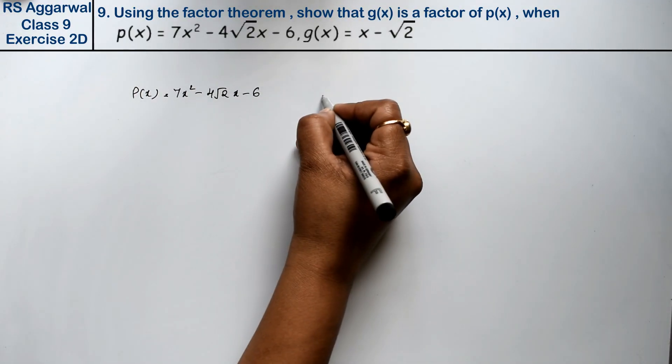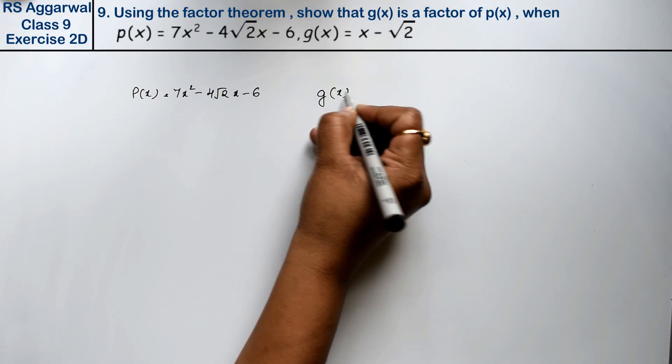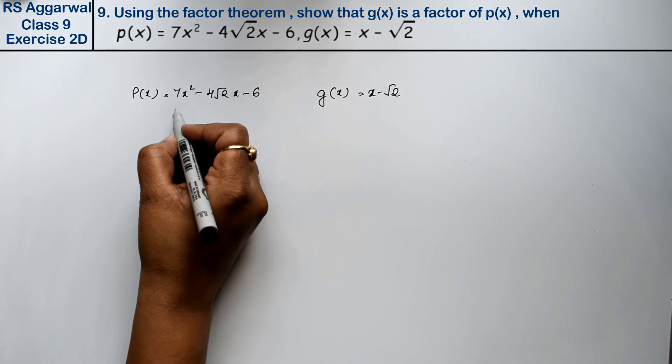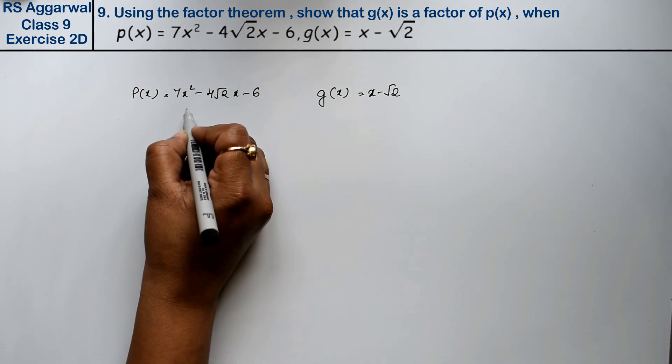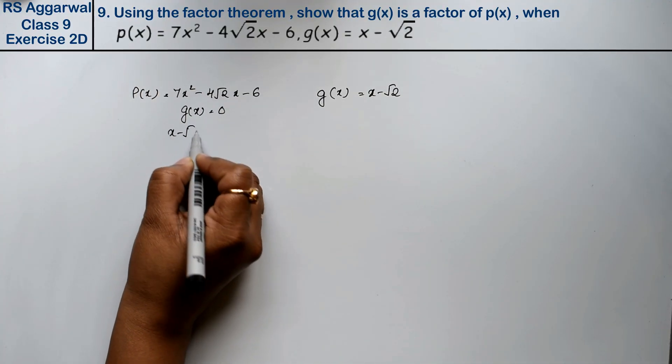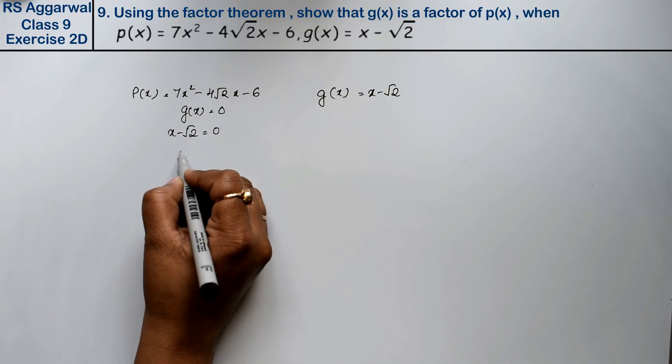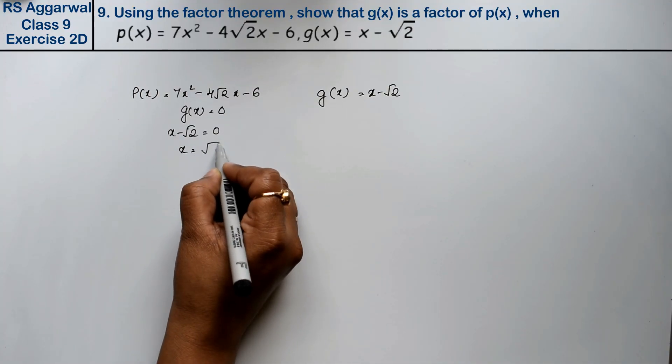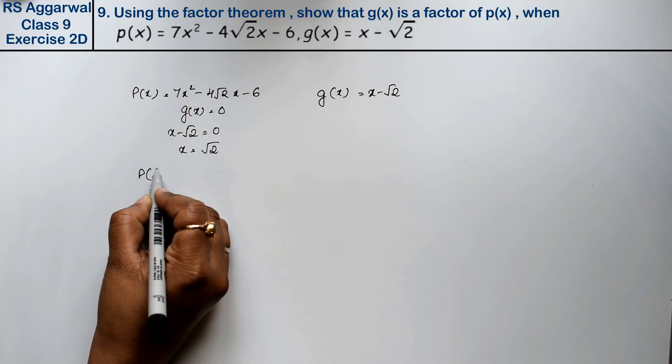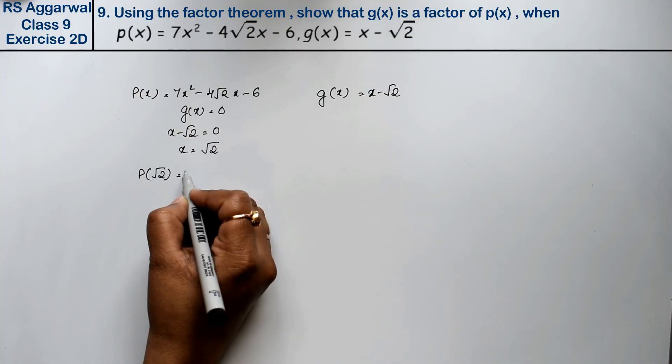And g(x) is given as x - √2. According to the factor theorem, we'll set g(x) equal to 0, so x - √2 = 0, which gives x = √2. Now we'll substitute the value x = √2 into p(x).